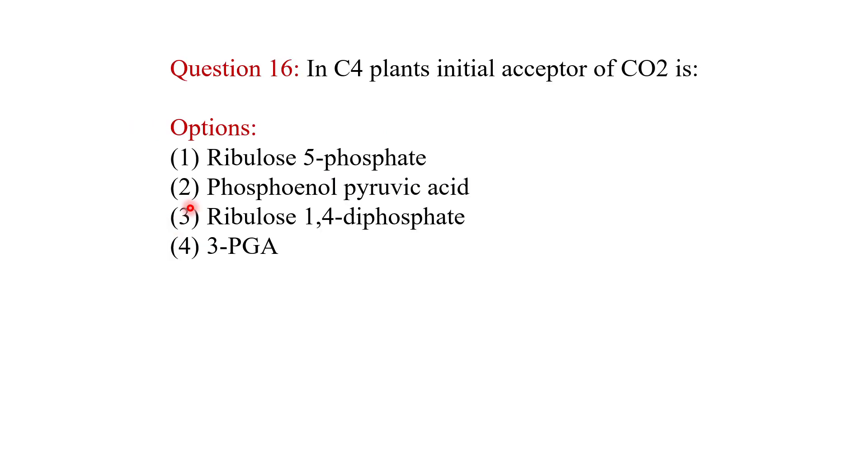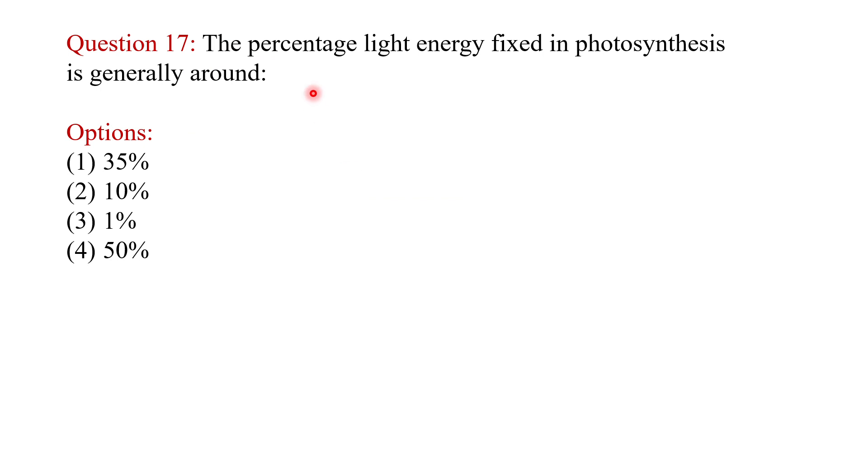In C4 plants, the initial acceptor of CO2 is phosphoenolpyruvic acid or PEP. The percentage of light energy fixed in photosynthesis is generally found at what percent? The answer is 1%.